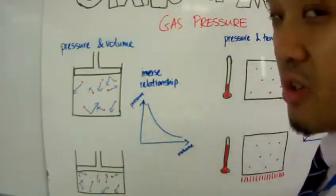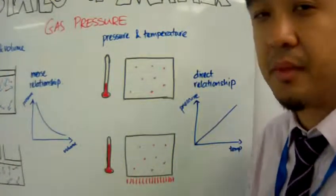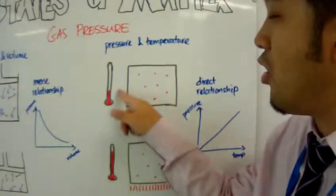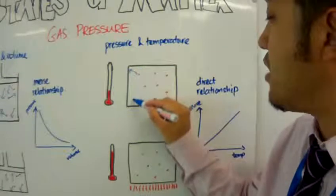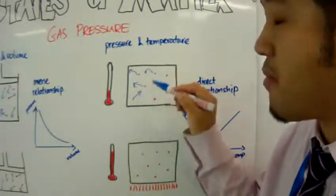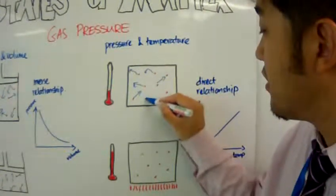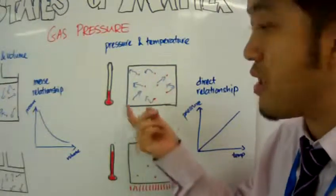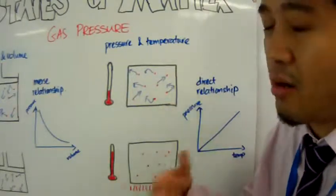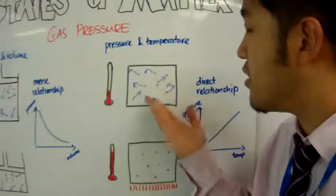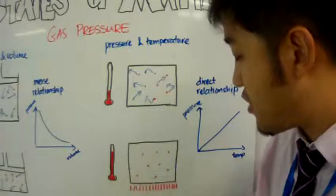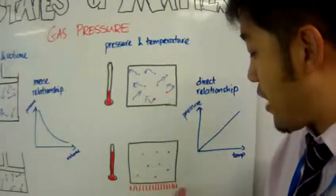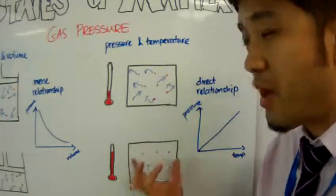Now let's talk about pressure and temperature. The two containers are the same size. At a particular low temperature, the speed of the particles is relatively similar — still random in motion and direction — but the average rate of the particles traveling and hitting the wall of the container is relatively low. So it has a low pressure compared to when we raise the temperature. Let's raise the temperature by putting this container on top of a stove. When you apply heat to the container, you provide more energy to the particles inside.